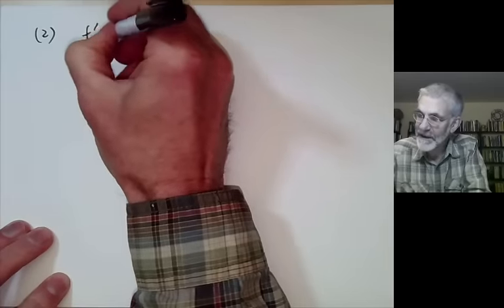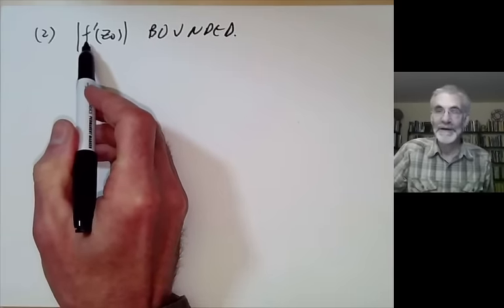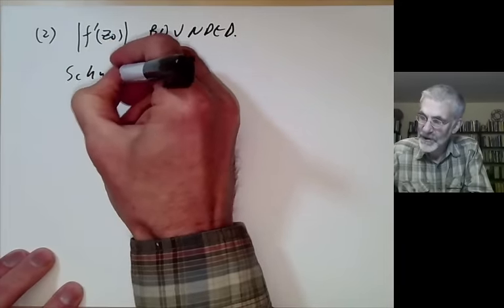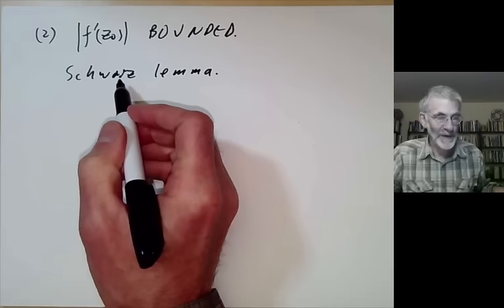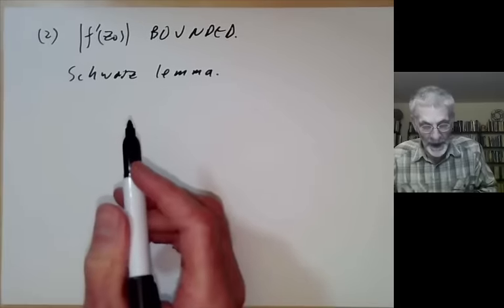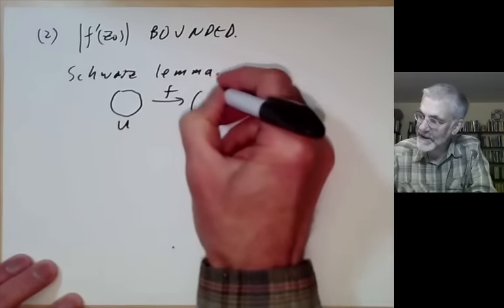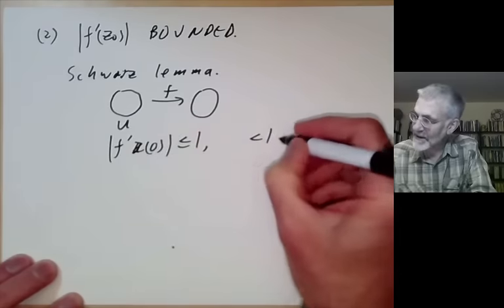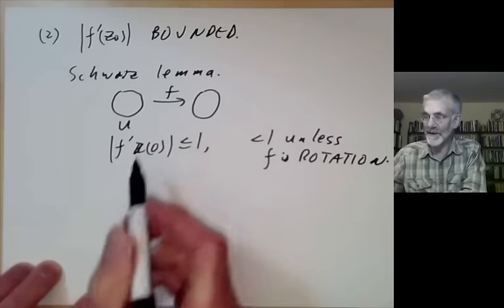Next we show that F'(Z₀) is bounded — that no matter which injective F you take, there's a universal upper bound. For this we recall the Schwarz lemma. The Schwarz lemma says that if you have a map from the unit disk to the unit disk, then |F'(0)| ≤ 1, and it equals 1 only if F is a rotation. This is easy to prove: you look at F(Z)/Z, check this is bounded by 1 by examining values near the unit circle, and if F(Z)/Z equals 1 at some point then F(Z)/Z is constant, implying F is a rotation.